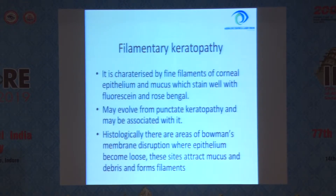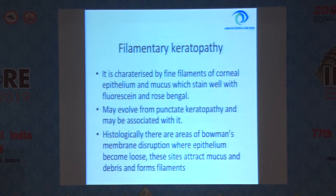There is another related disorder called filamentary keratopathy, which is characterized by fine filaments of corneal epithelium and mucus, which stain well with fluorescein and rose bengal. They may evolve from punctate keratopathy and may be associated with it. Histologically, there are areas of Bowman's membrane disruption where epithelium becomes loose, and these sites attract mucus and debris and form filaments.